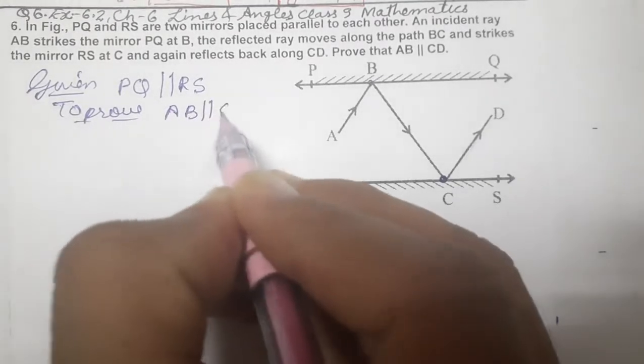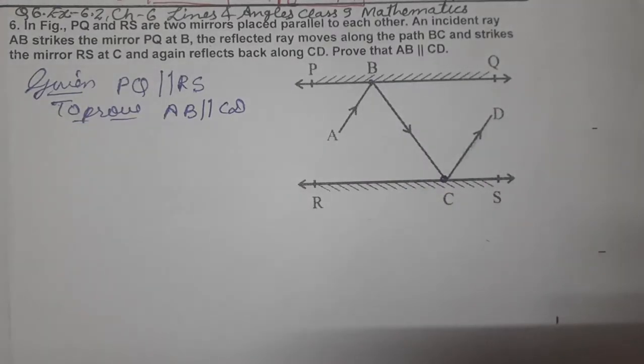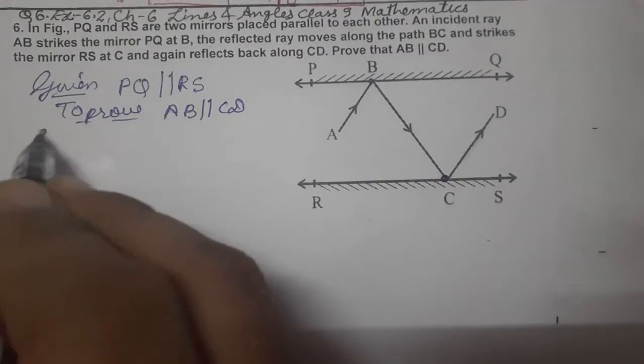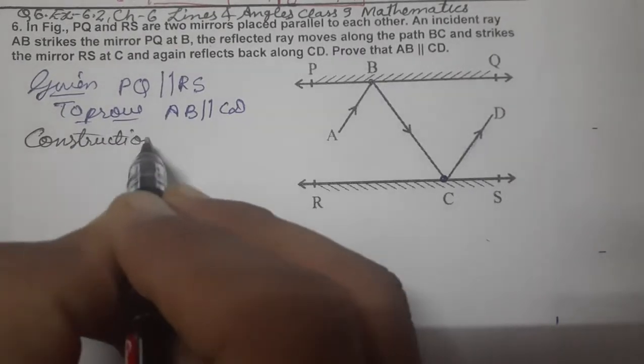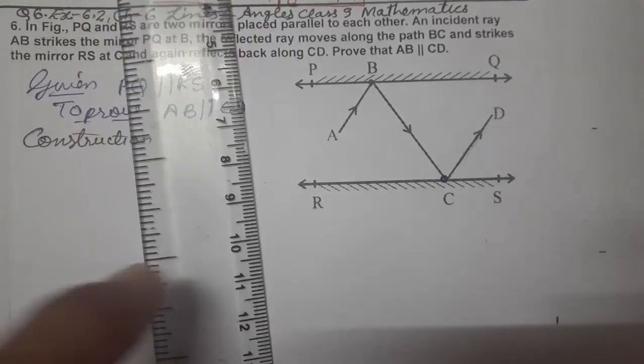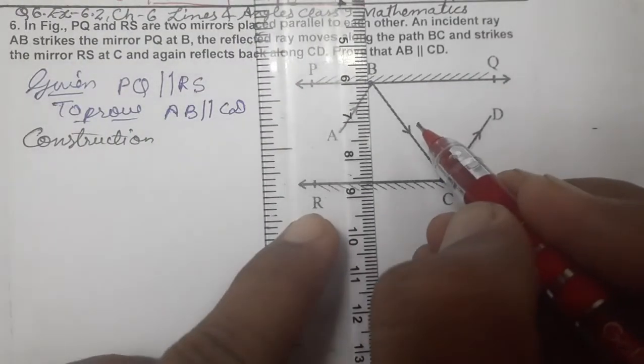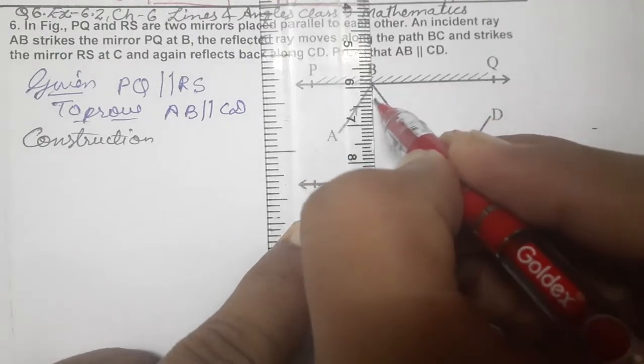Rays are given to us: AB incident and CD reflected. To prove: AB is parallel to CD. Now we have to do construction. So let's take scale and ruler.